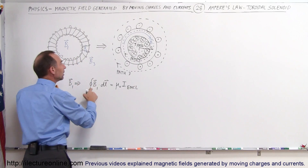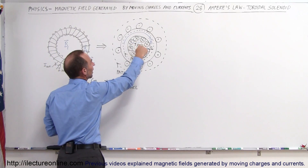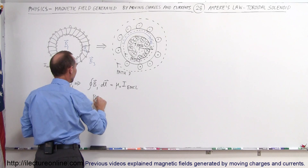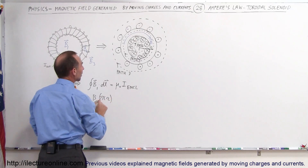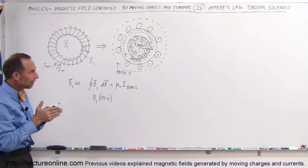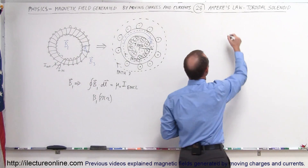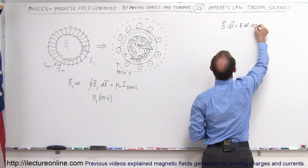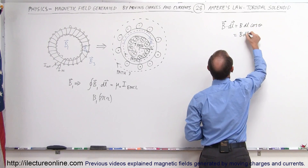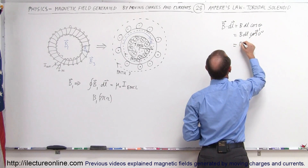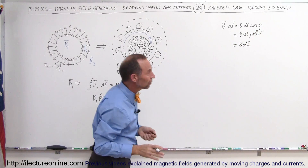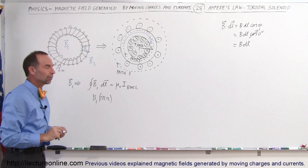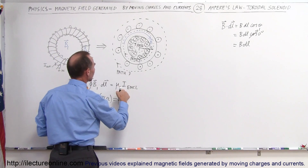Notice that B1 · dL integrated all the way around the loop gives B1 times 2πr. The magnetic field and the path are assumed to be parallel, so B · dL equals B times dL times cos(θ). With θ = 0°, cos(0) = 1, so integrating all the way around gives the magnitude of B1 times the path length, equal to μ₀ times I enclosed.